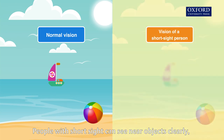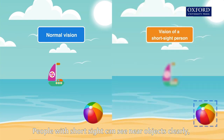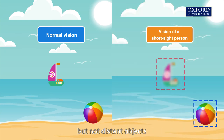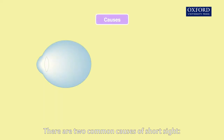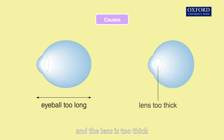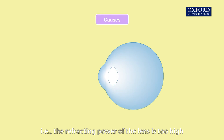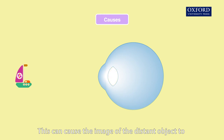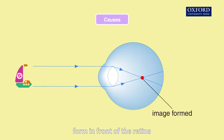People with short sight can see near objects clearly but not distant objects. There are two common causes of short sight: the eyeball is too long and the lens is too thick — that is, the refracting power of the lens is too high. This can cause the image of the distant object to form in front of the retina.